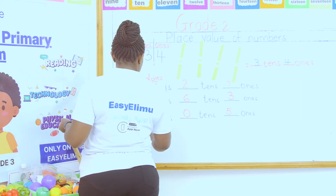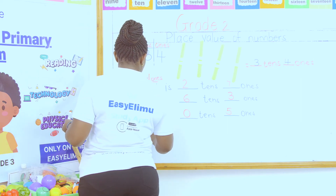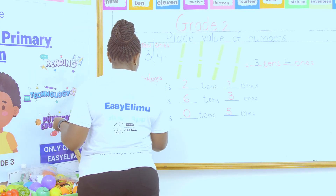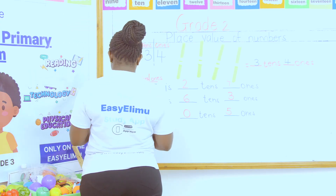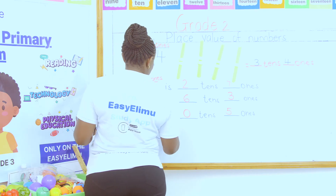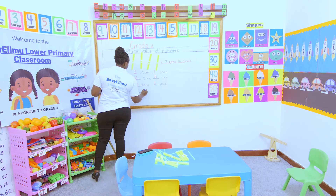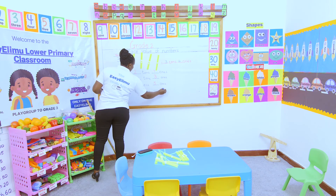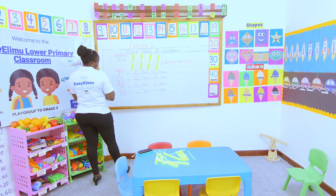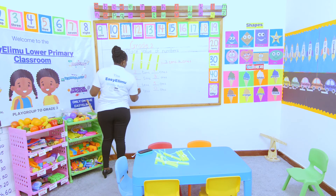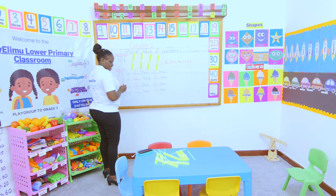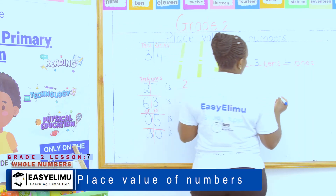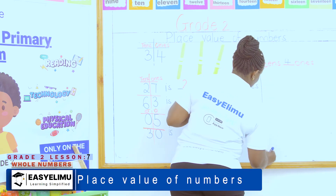What if you have been given the number 30? That one should not worry you — 30 already has two digits. Using the tens frame, dash is dash tens, dash ones. The answer is zero ones and three tens.